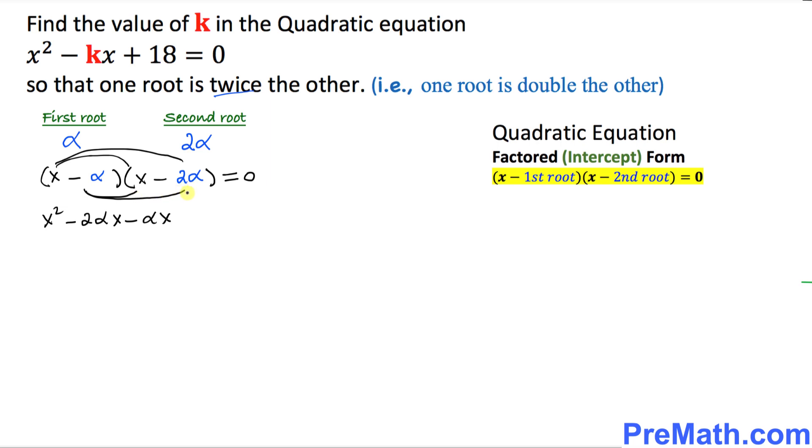And this negative alpha and negative two alpha is going to make positive two alpha square equal to zero. Let's simplify it a little bit more. So I can write x square minus three alpha x plus two alpha square equals to zero.